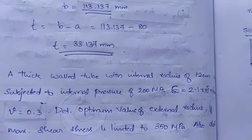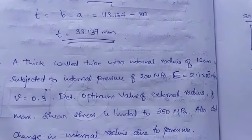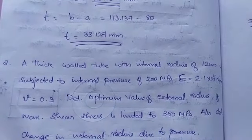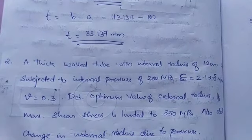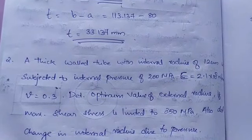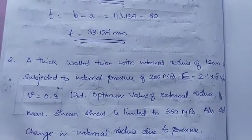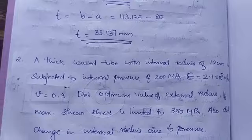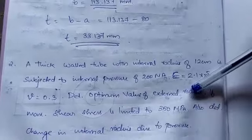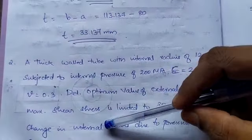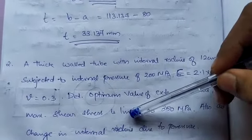Next question: a thick-wall tube with internal radius a = 12 cm is subjected to internal pressure of 200 MPa — which equals 200 N/mm² since 1 MPa = 1 N/mm². E = 2.1 × 10⁵ N/mm², nu = 0.3. Determine the optimum value of external radius b if the maximum shear stress is limited to 350 N/mm².